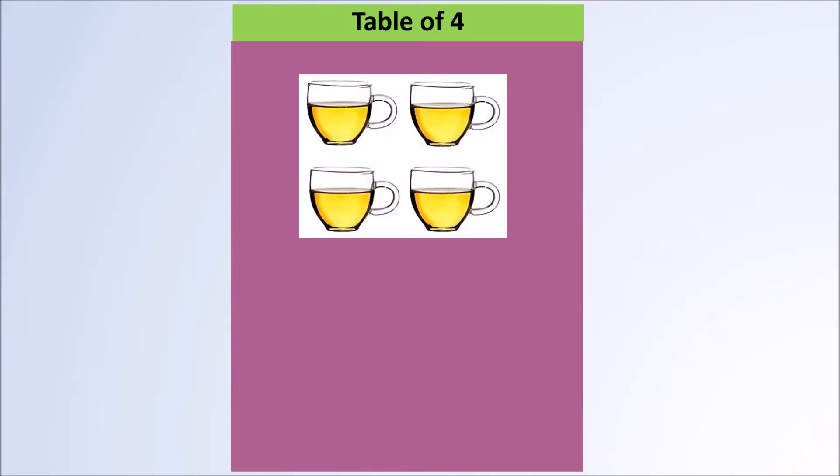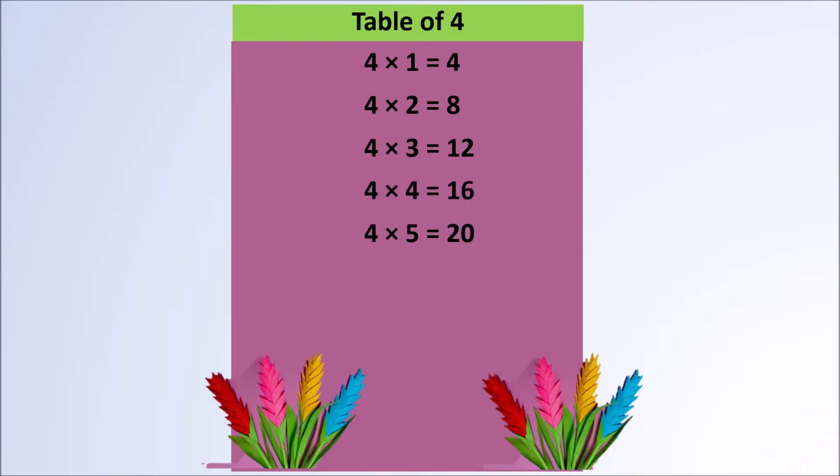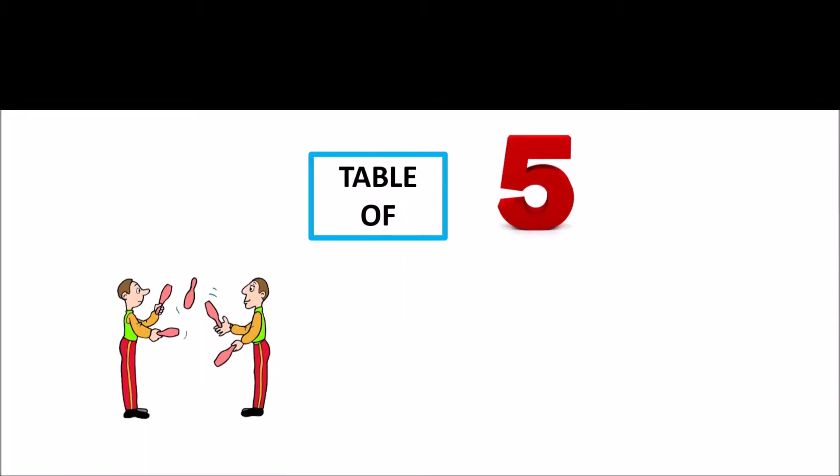Table of 4. 4 1s are 4, 4 2s are 8, 4 3s are 12, 4 4s are 16, 4 5s are 20, 4 6s are 24, 4 7s are 28, 4 8s are 32, 4 9s are 36, 4 10s are 40.